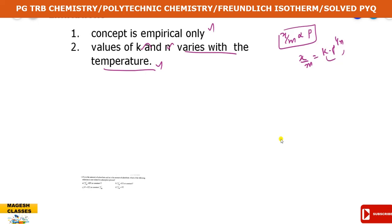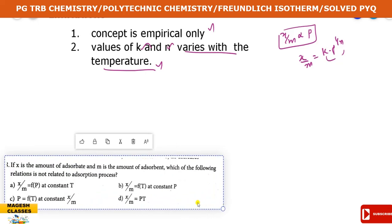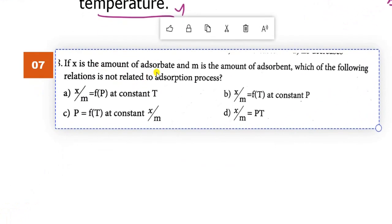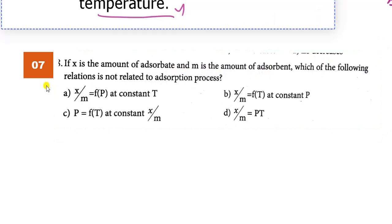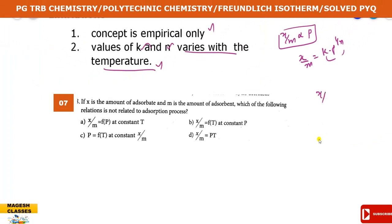The Freundlich adsorption isotherm has limitations, and Langmuir adsorption isotherm was developed to overcome them. Langmuir adsorption isotherm will be covered in a separate video. Now, a question: if x is the amount of adsorbate and m is the mass of adsorbent, which of the following relations is not related to the adsorption process? Adsorption is a function of pressure and temperature - both are important factors.